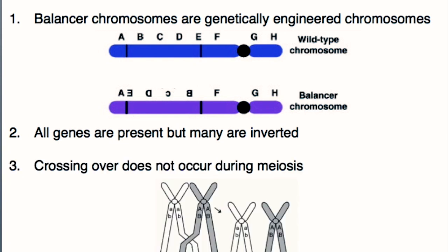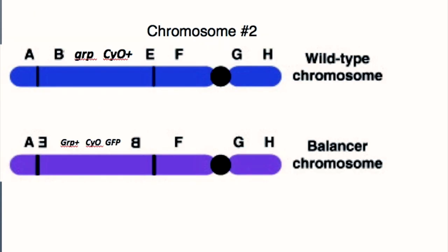Crossing over does not occur with balancer chromosomes, and this is a real strength for maintaining a mutant fly line. We don't want genetic diversity — we want the flies to be heavily inbred and genetically very similar. Our balancer chromosome is chromosome 2. It's the same as chromosome 2 except it's engineered: it has all of the same genes that normal chromosome 2 has, but some of them are out of order and some of them are backwards.